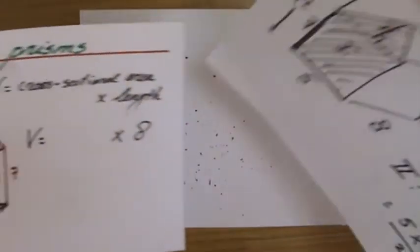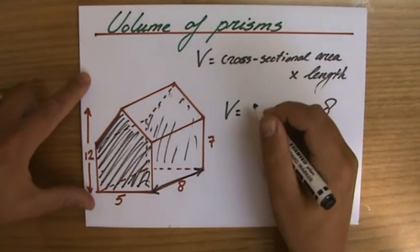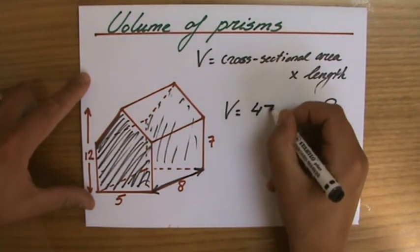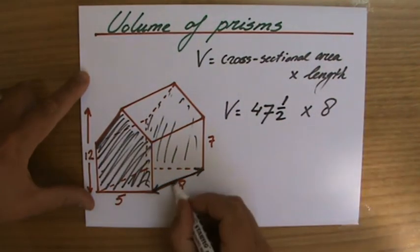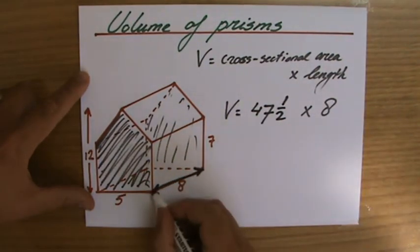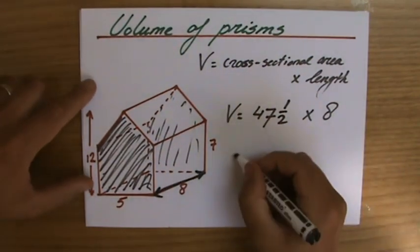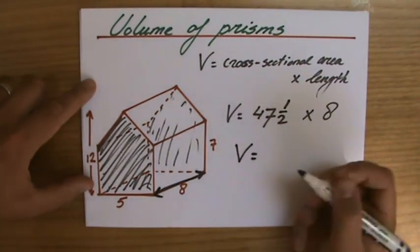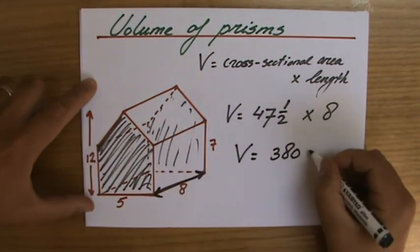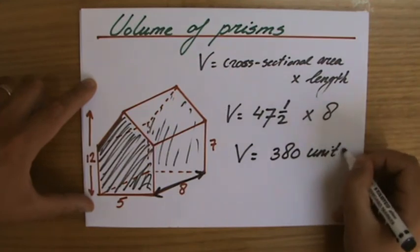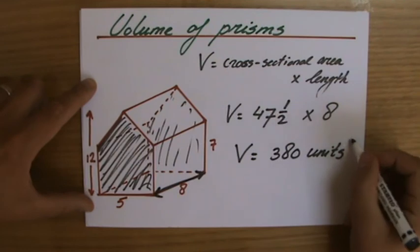Let me go back to the initial paper where we said the volume is the area of the cross section — 47 and a half, as we just found — times the length, which is the distance between those two similar sides. So 47 and a half times 8. You can use a calculator for that if you like. It equals 380. There's no unit given, so let's just say units — and we're talking about volume, so it's units to the power of 3.